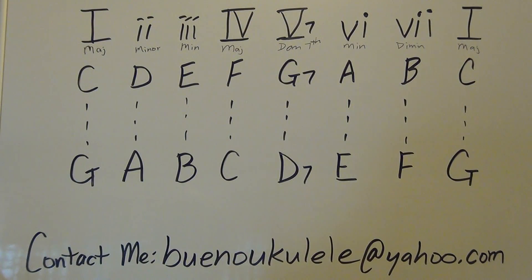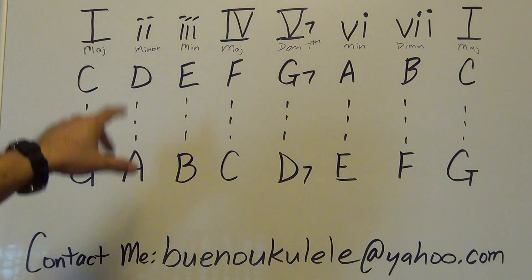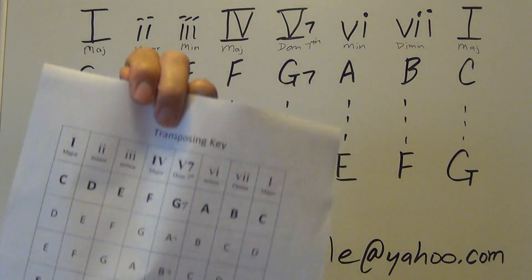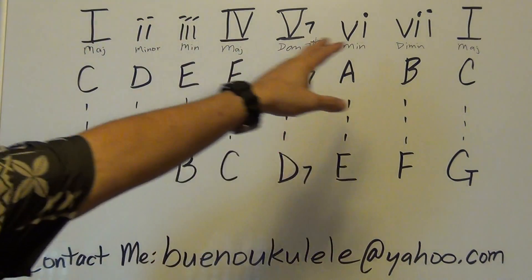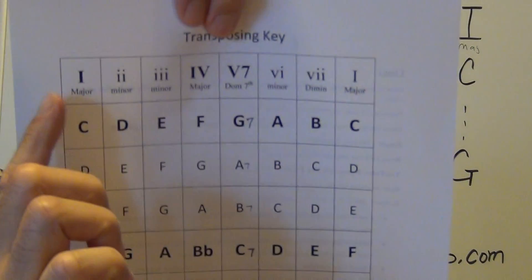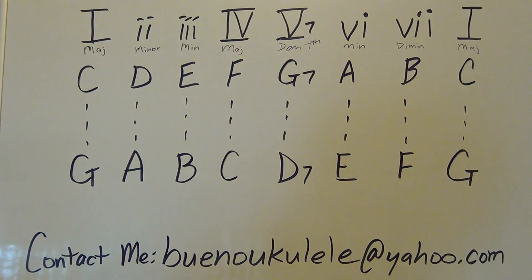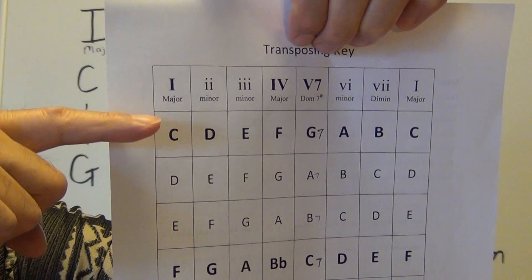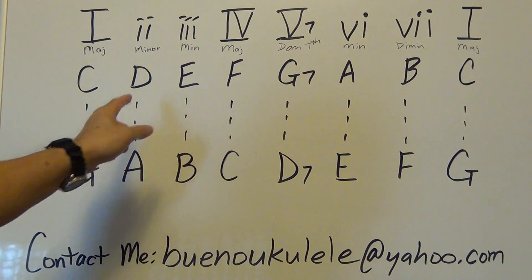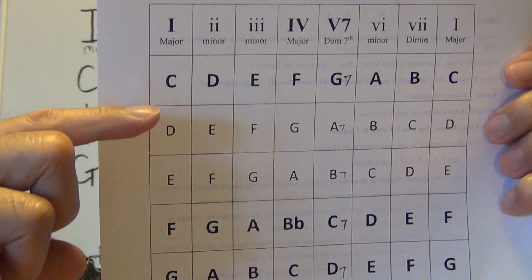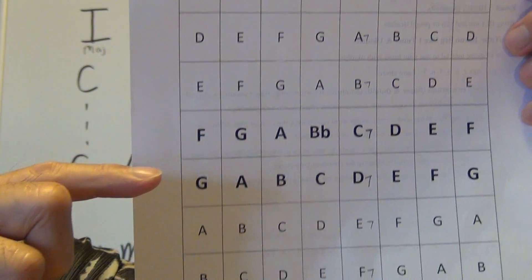What I wrote on the board is a shorter version of what you're seeing on the chart. On the chart at the top you have Roman numerals. Beneath that: major, minor, minor, major, minor, minor, major, dominant seven, minor, etc. The first line is the key of C. I also skipped a couple of lines below that and jumped to the key of G.